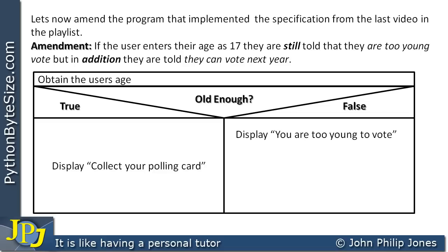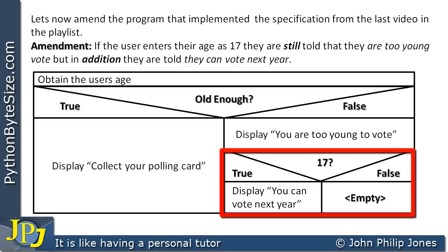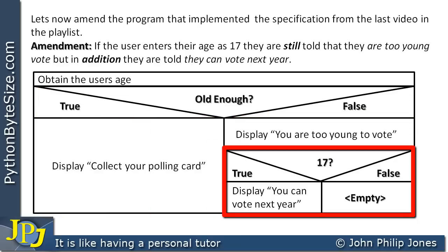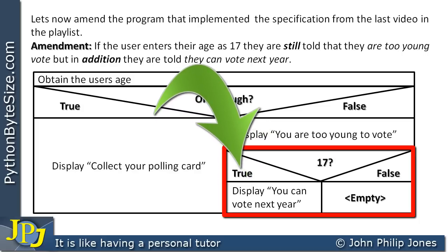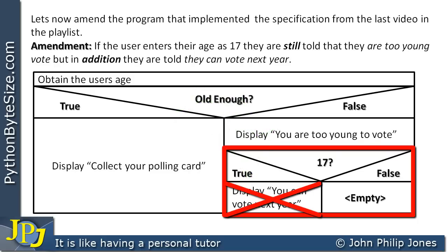In the false route we need to ask another question: are you 17? If they are 17, we display 'you can vote next year'. So in the false route we put an if-selection construct, which is nested inside the outer if-else selection construct — that's where the term 'nested' comes from. If the age is 17, that message is executed; if they're not 17, we have an empty action, meaning we don't execute anything.